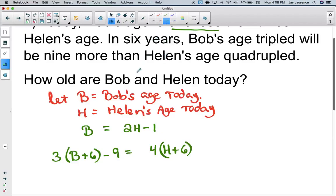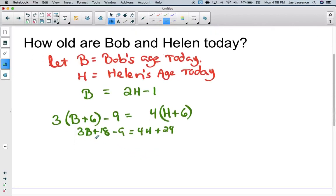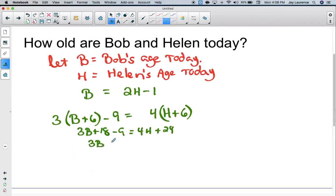I'm going to clean up that second equation. I'm going to get 3B + 18 - 9 equals 4H + 24. Then I'm going to get 3B + 9 equals 4H + 24. And just to make things prettier, I'll subtract nine from both sides and end up with 3B = 4H + 15.